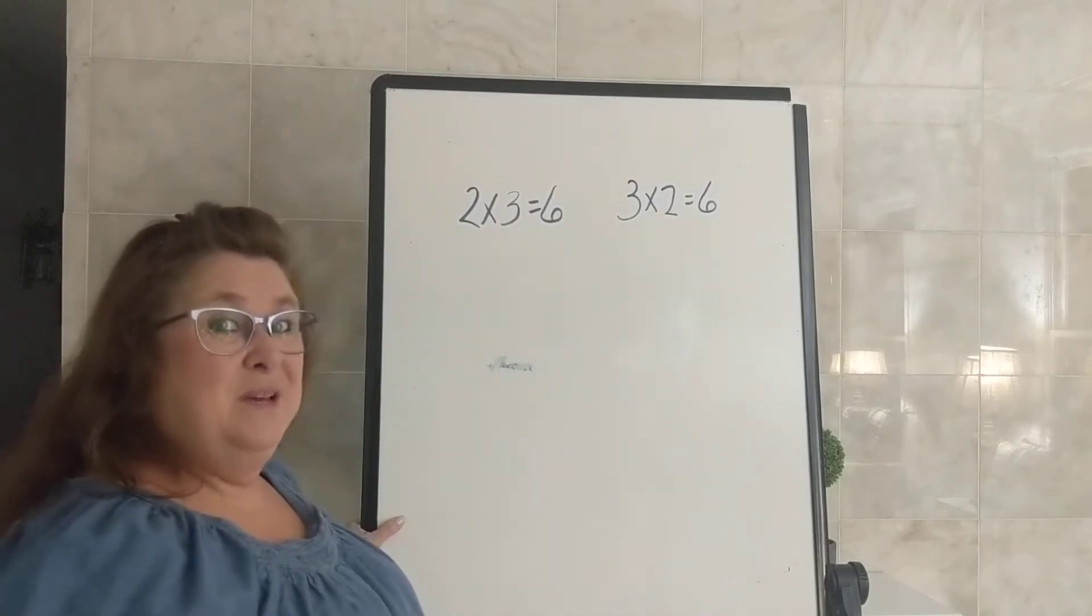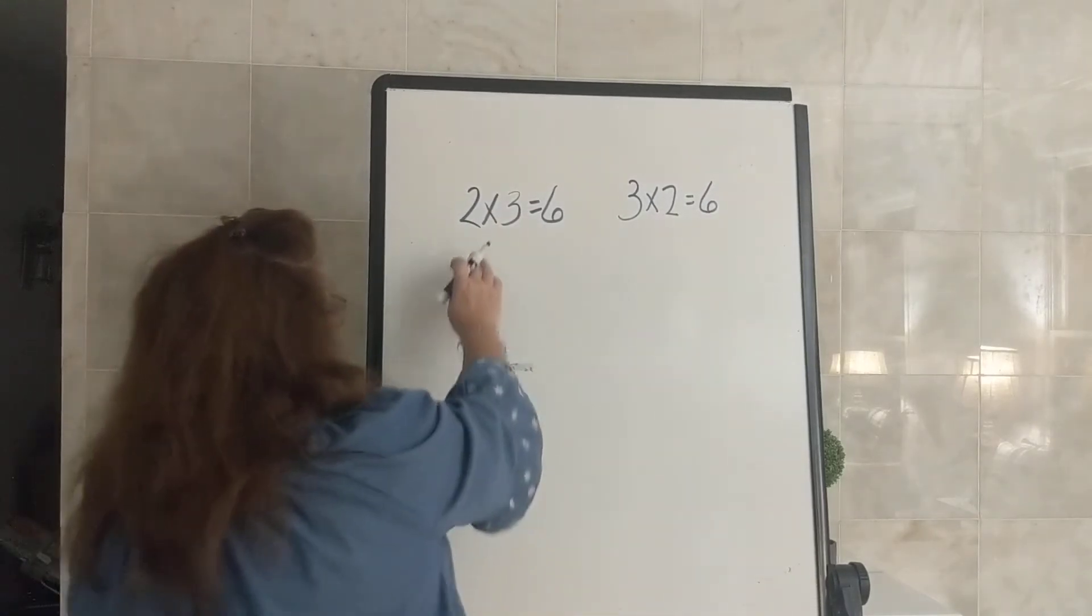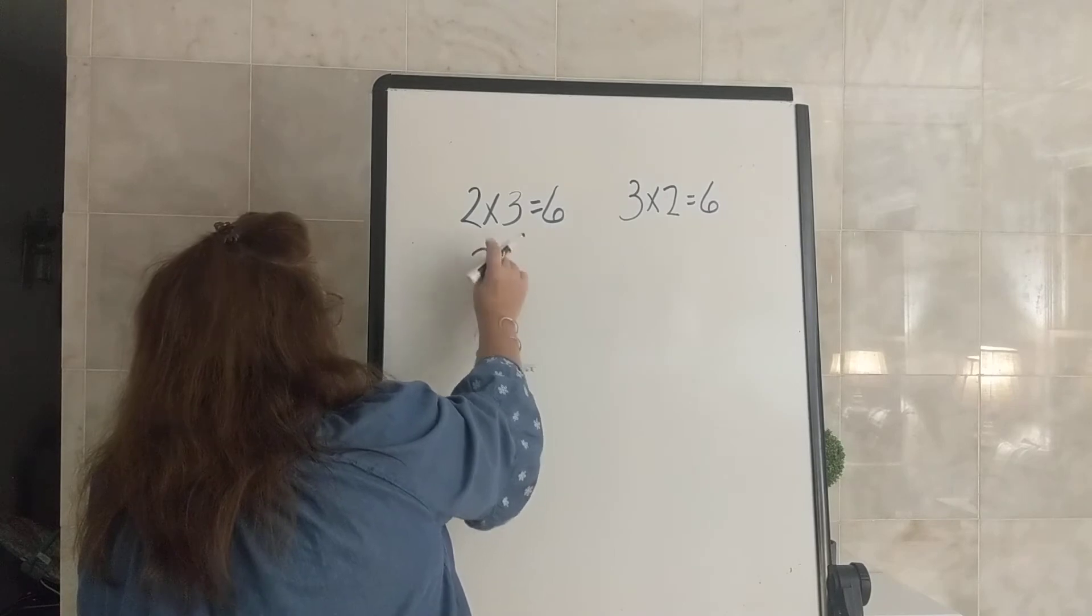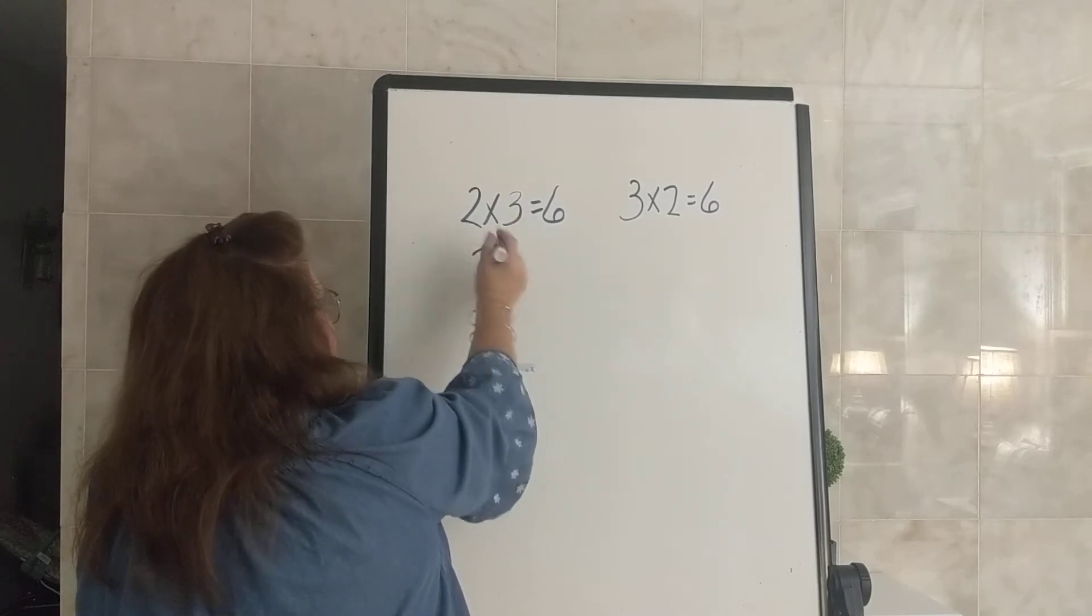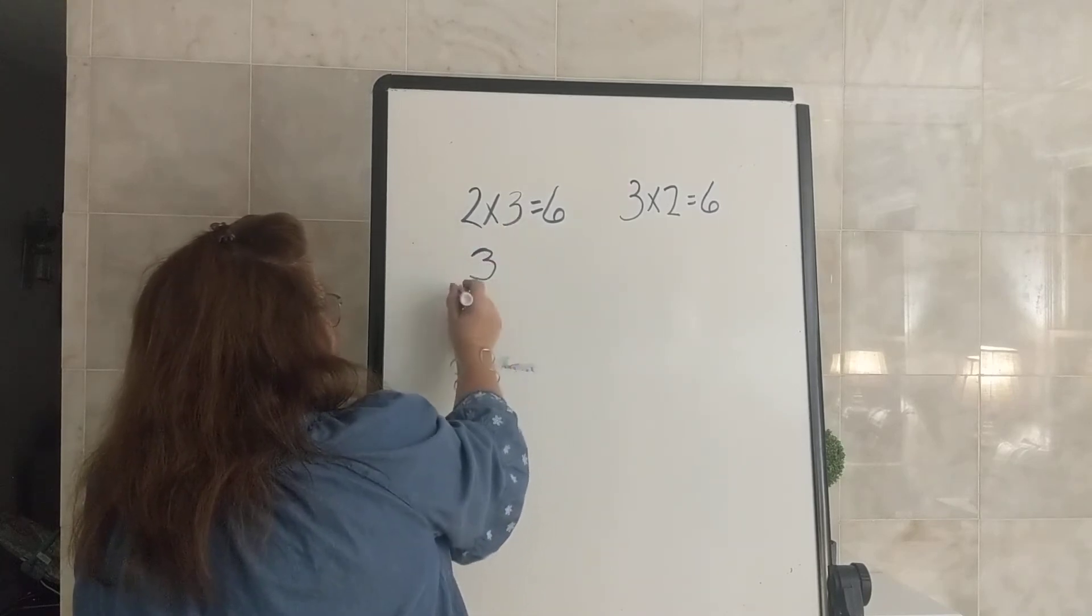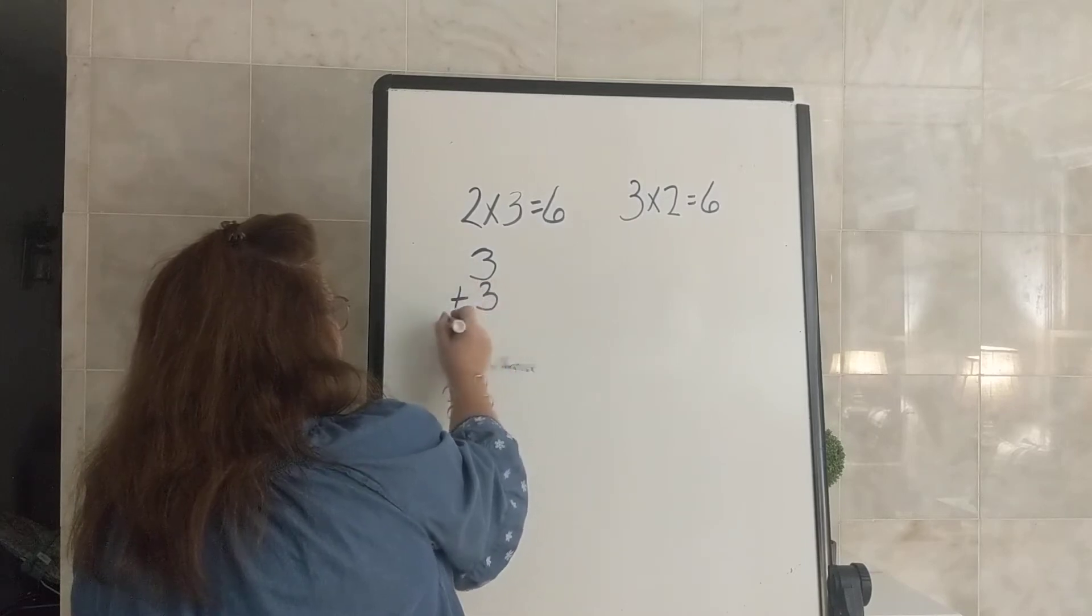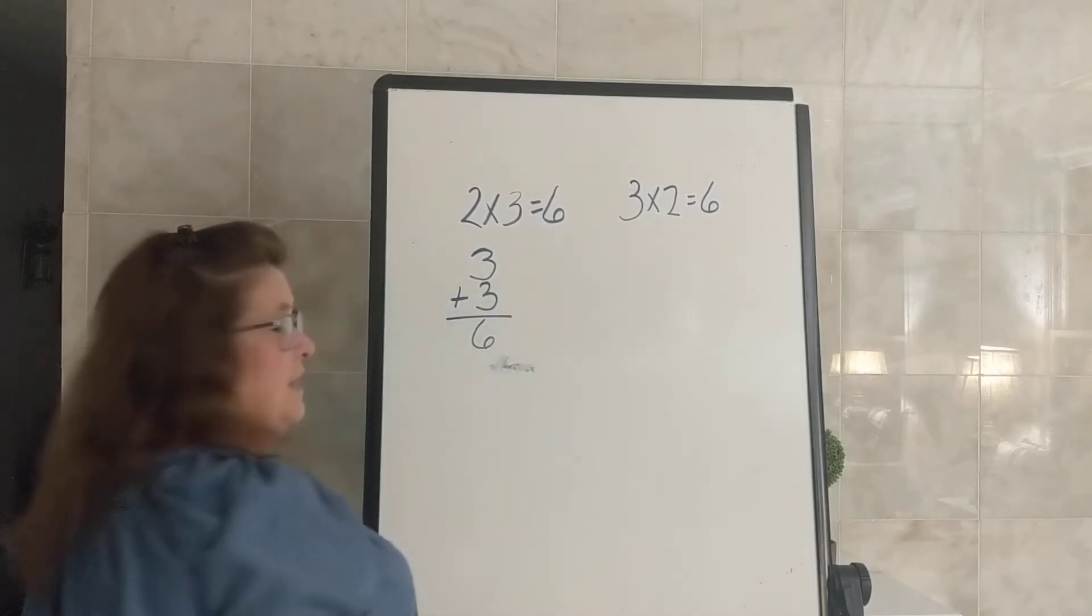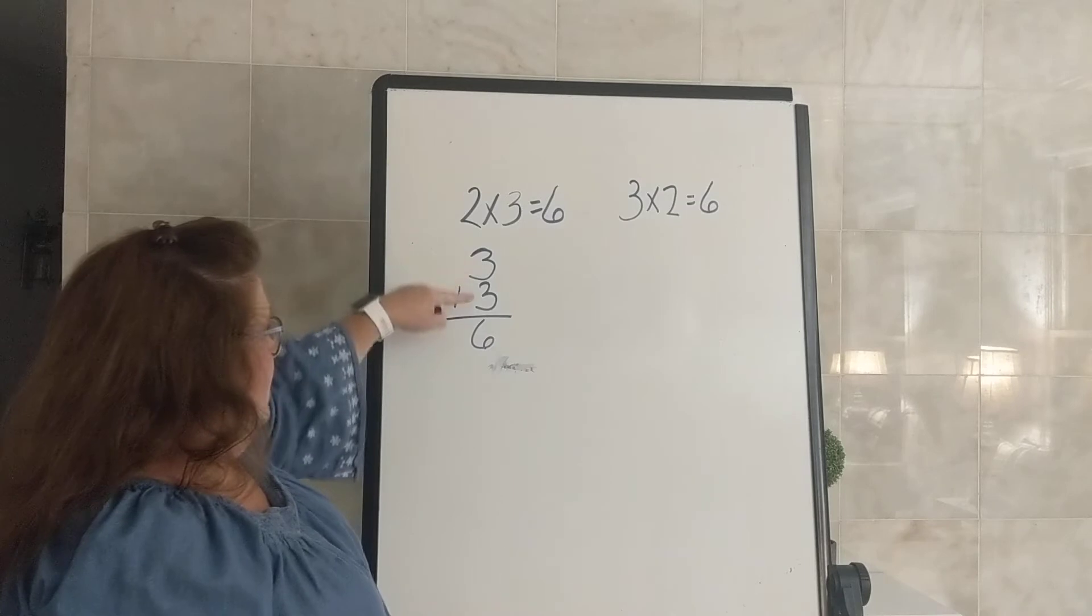Or remember how when we skip count, we can add 3 two times, 3 plus 3 equals 6. That's like skip counting, 3, 6.